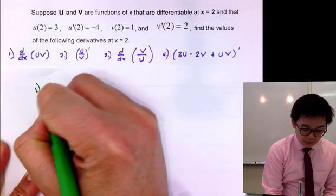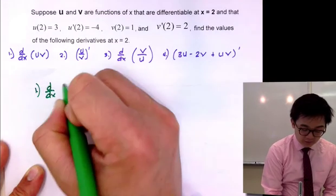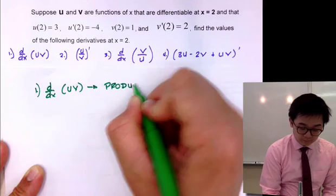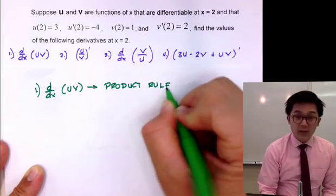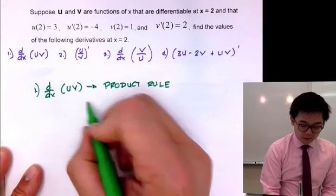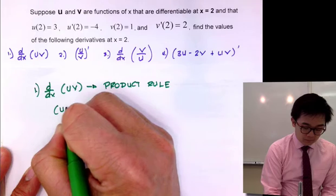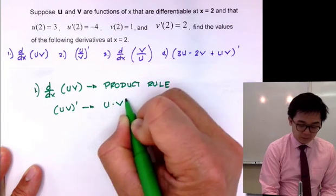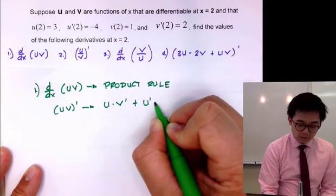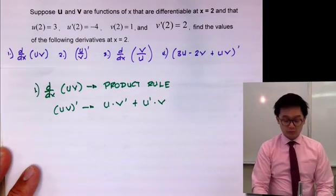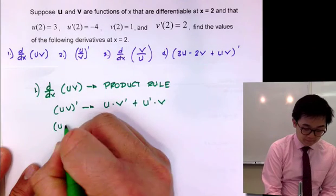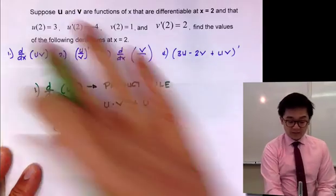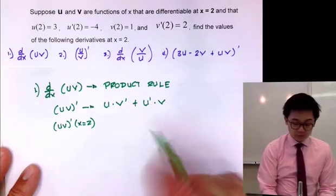Let's try it out with our first problem, which is to find the derivative of uv in terms of x. We have uv, and we know that we're going to be using the product rule in finding the derivative of uv. The derivative would be u multiplied by v prime plus u prime times v. That is the product rule for u and v, and we need to evaluate it at x equal to 2.